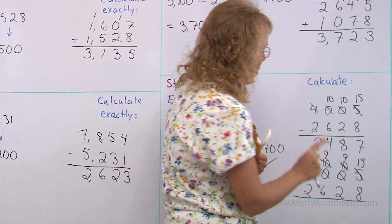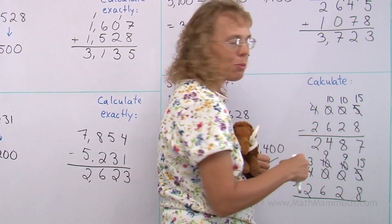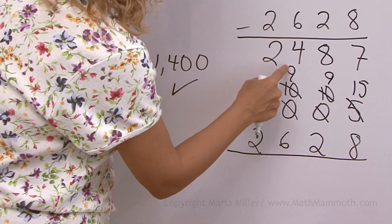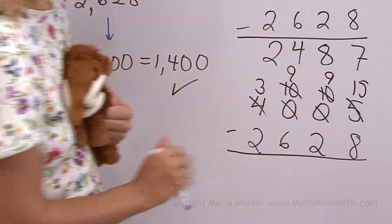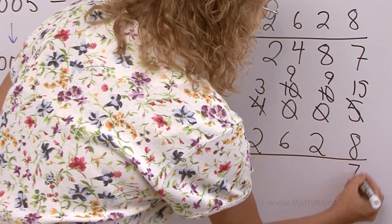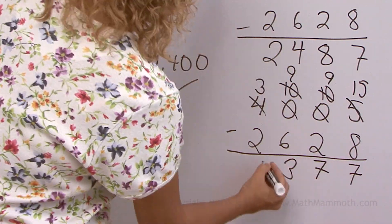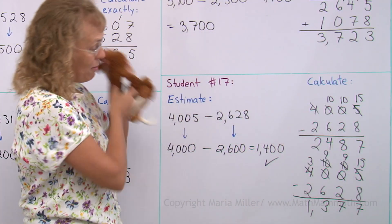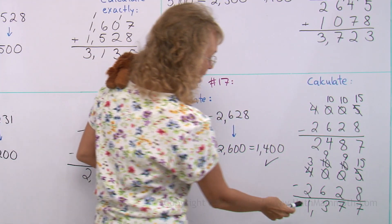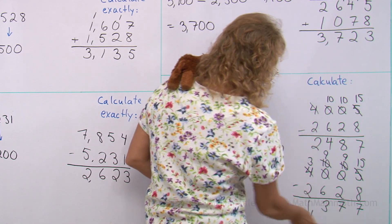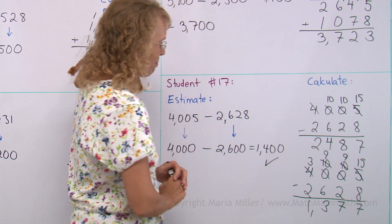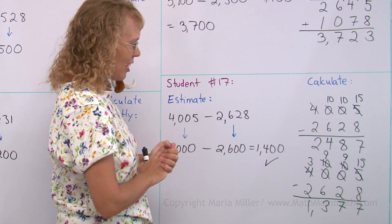Whenever you are regrouping and you have all these zeros here, you have to regroup with zeros, you will get these strings of nines and tens like that. So 15 minus 8 and 3 and 1. Now all looks well. You can see 1377 is close to the students estimation. So everything looks just fine.